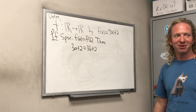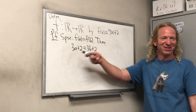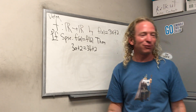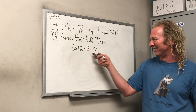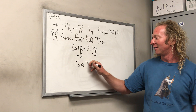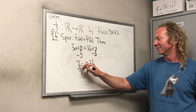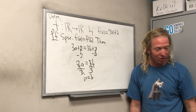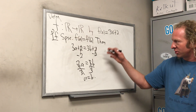From 3a + 2 = 3b + 2, we subtract 2 from both sides, then divide by 3, and we get a = b. We use variables because we have to show it works for all values — for any a, b in the domain. That's it. This shows f is one-to-one. The proof is complete.